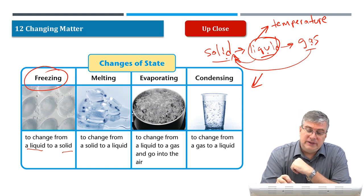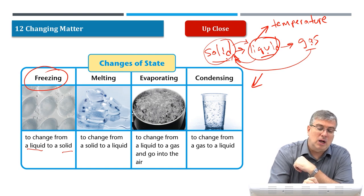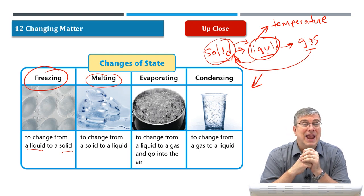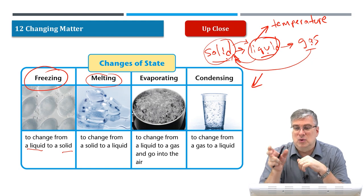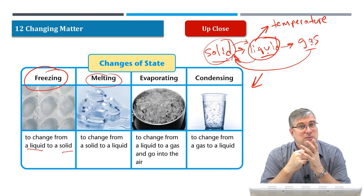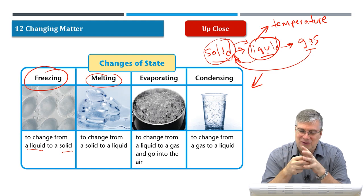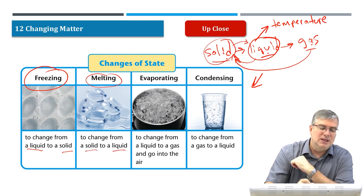If the temperature increases, that solid ice will change into a liquid — we call that process melting. If you have ice on a hot summer day and you put it on your desk, that ice will slowly melt into liquid. The same thing happens with an ice cream cone. If you're eating ice cream, eat it quickly enough so it doesn't melt all over your hand. Melting is to change from a solid to a liquid.